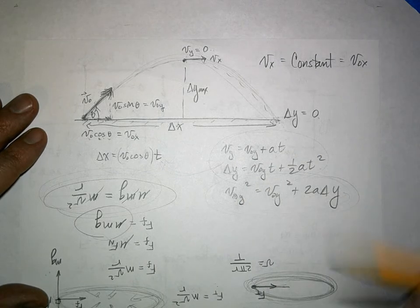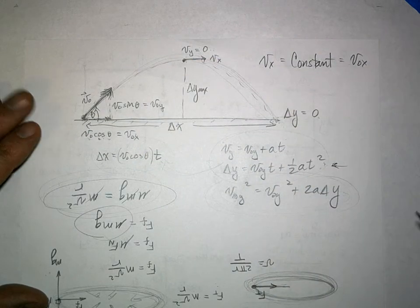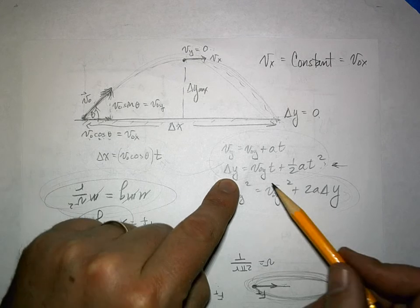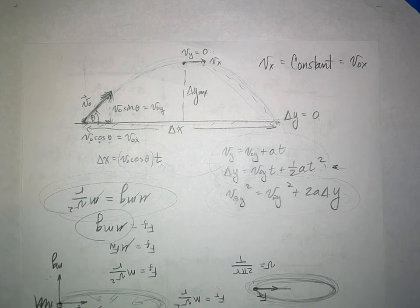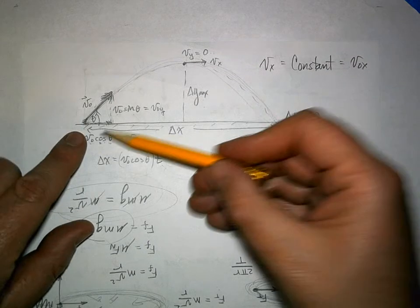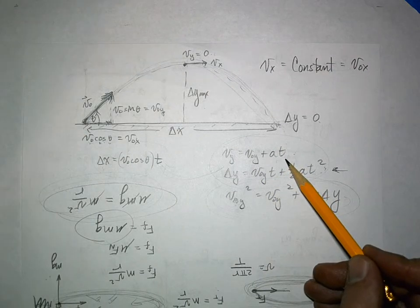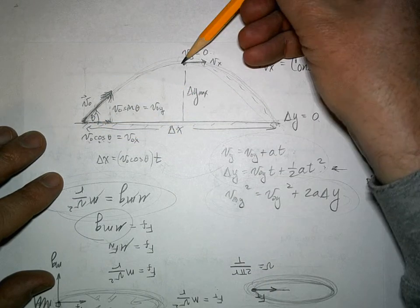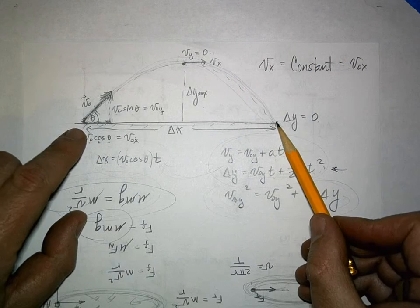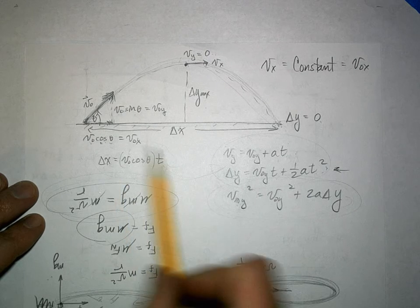With delta y equals zero you can use the equation zero equals v-naught-y times t plus one-half a t-squared, divide by t and solve for the remaining t. Alternatively, use the simpler equation to find the time to go up — but remember that gives only half the total time, since the time up equals the time down, as long as you land at the same height you launched from. Then use that total time with the x equation to find the range.